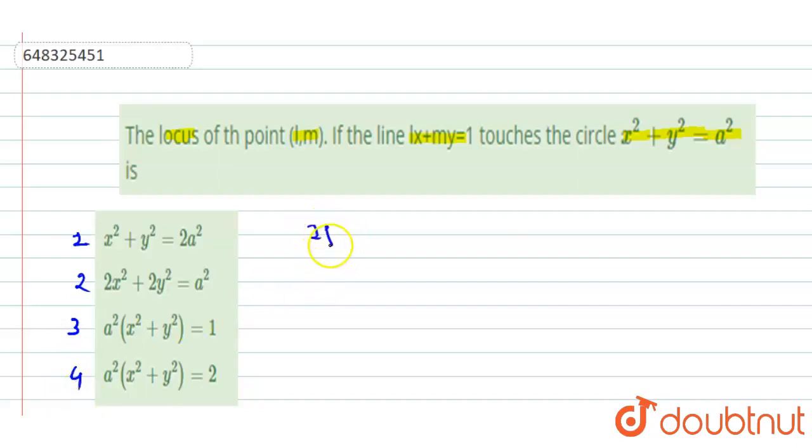Here it is given that if the line lx + my = 1 touches the circle x² + y² = a², this implies